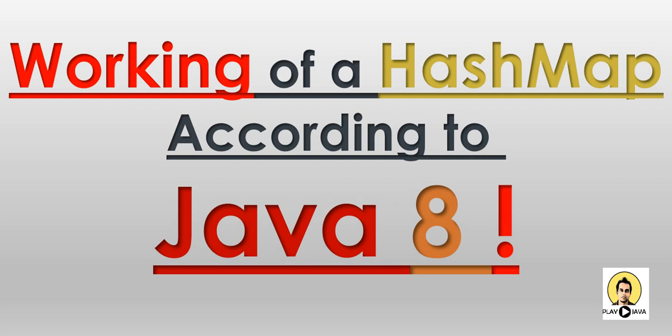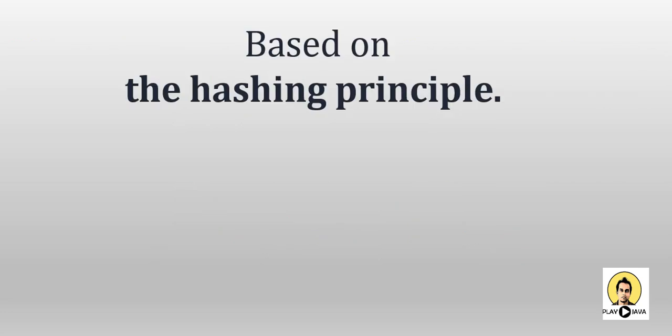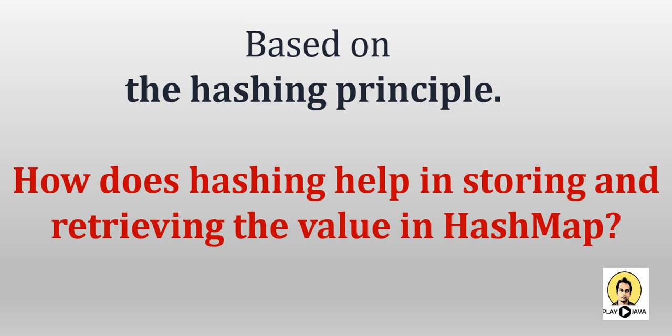Today we will see about the working of a HashMap according to Java 8 implementation. It is based on the hashing principle. Java has certain implementation on the HashMap and we will see about the get and put methods that are being used in HashMap. The question is: how does hashing help in storing and retrieving the value in a HashMap?